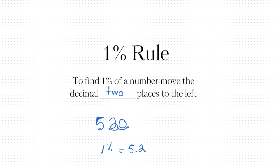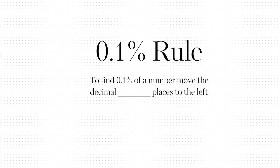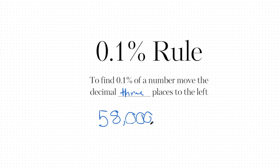There's one more to show you, and that's how to find one tenth of a percent. To find one tenth of a percent, you move the decimal three places to the left. So for example, if we have the number 58,000 and I want just one tenth of a percent, you take the decimal and move it over three spots — one, two, and three — so one tenth of a percent of 58,000 would be just 58.